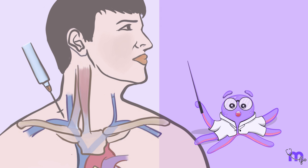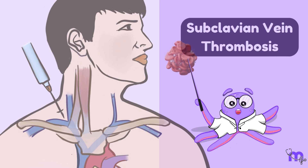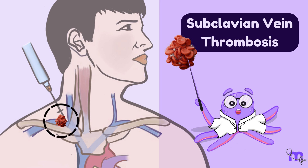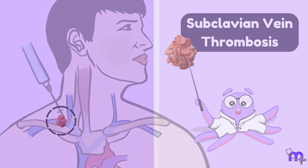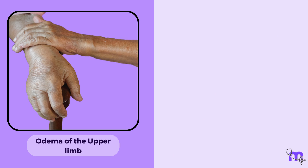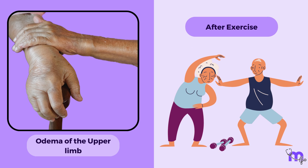Another clinical consideration is subclavian vein thrombosis, which can occur spontaneously or as a complication of an indwelling venous catheter. Clinically, it presents as edema of the upper limb, especially after exercise.